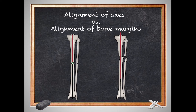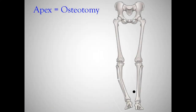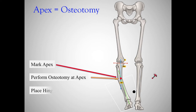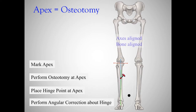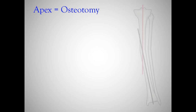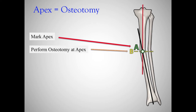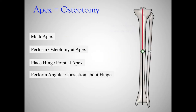Let's talk about the difference between alignment of axes versus alignment of margins. When the apex and the osteotomy are at the same level, we mark the apex, mark our osteotomy site at the apex, hinge around our hinge point, and we get perfect alignment — the axes are aligned and the bone is aligned. If everything goes your way, you have a perfect result with axes aligned and bone aligned.